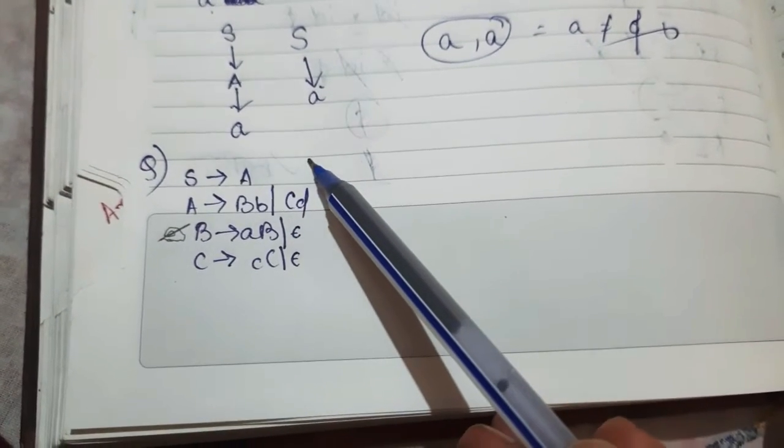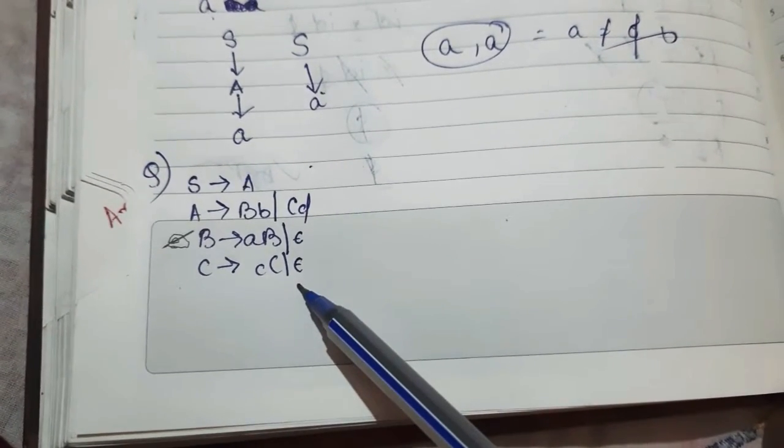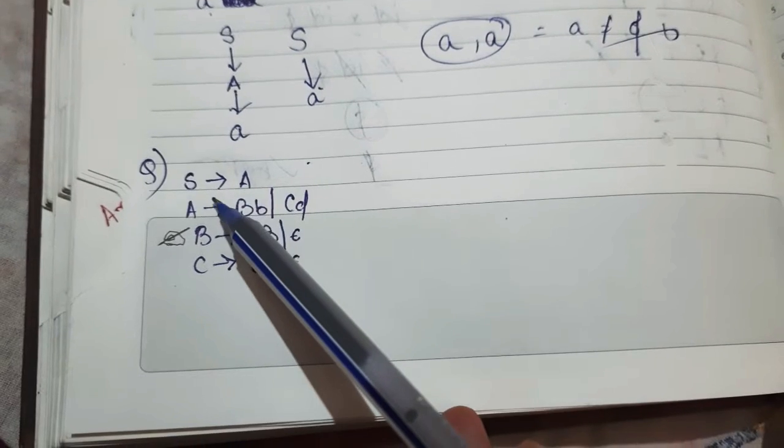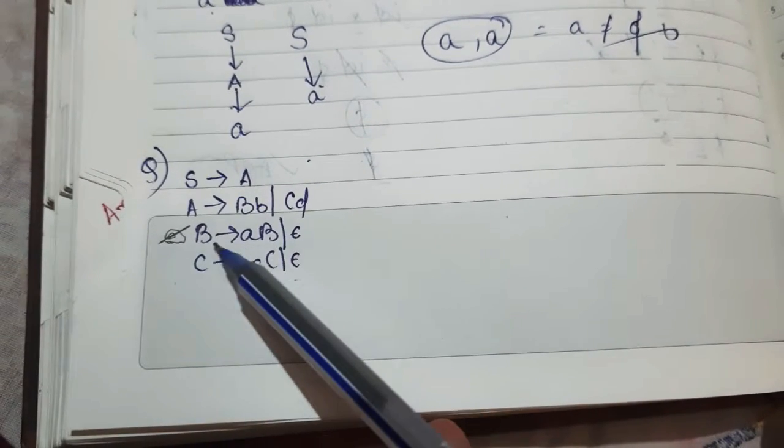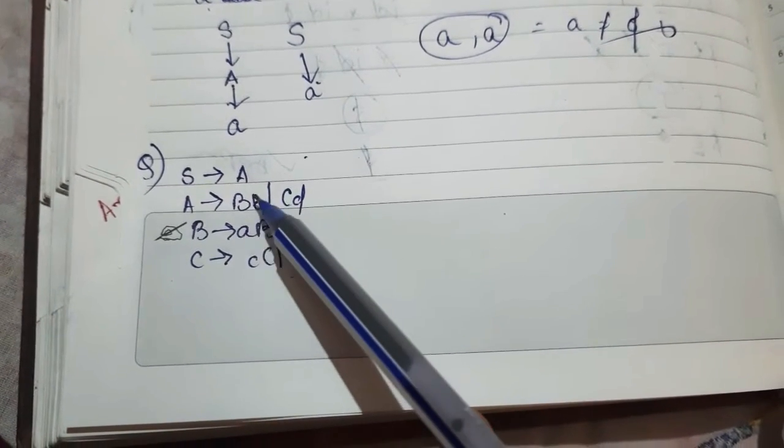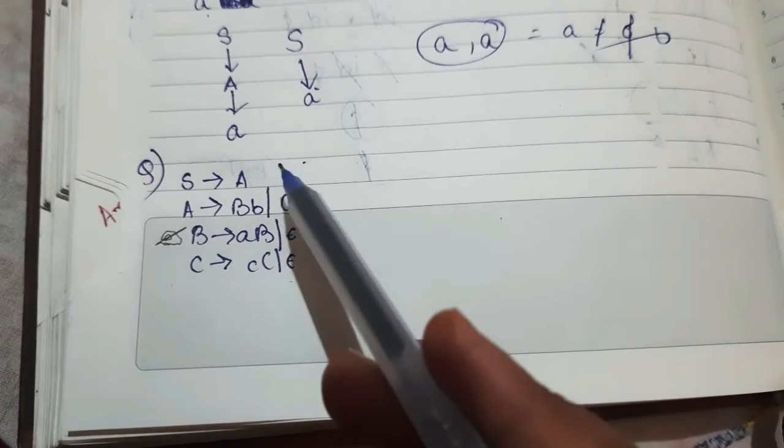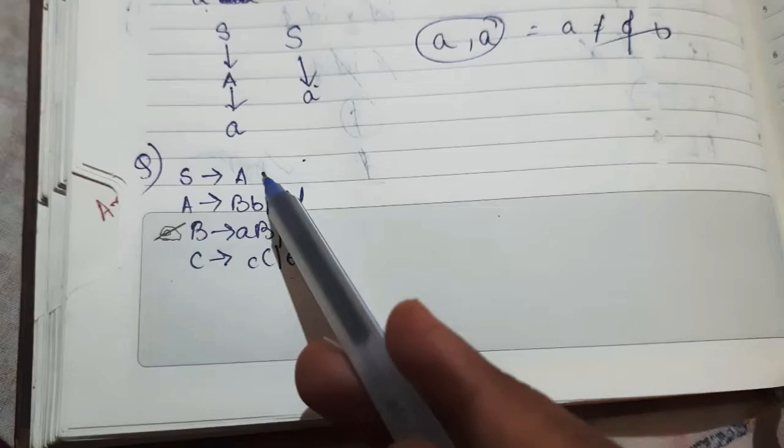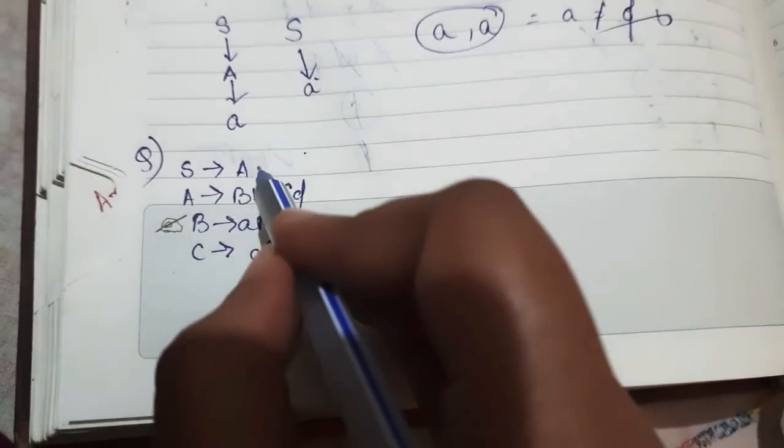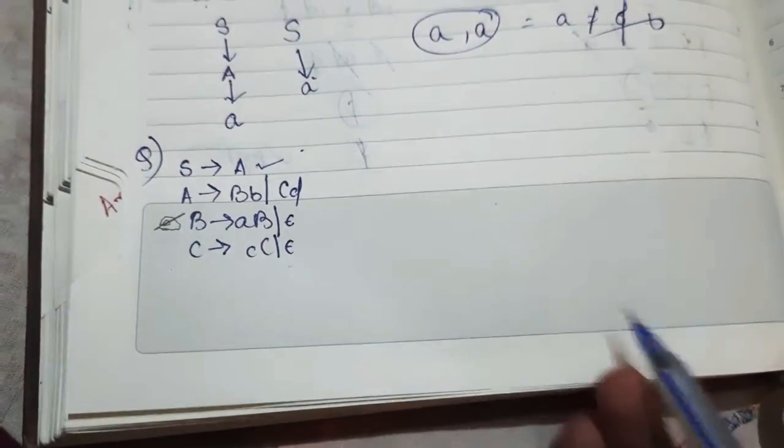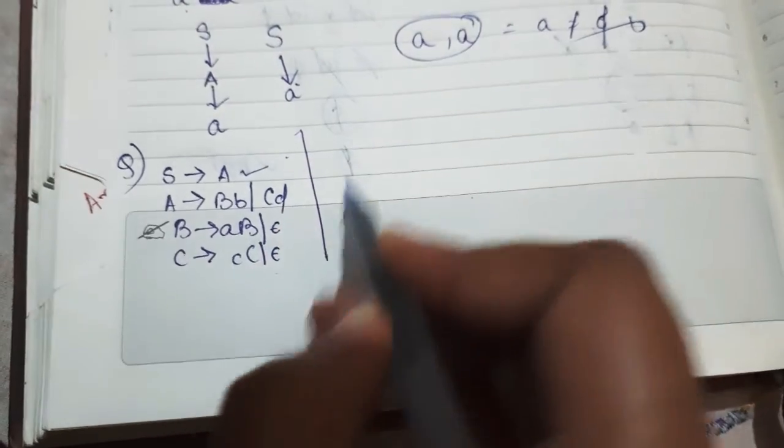We need to check if this grammar is LL1 or not. We cannot find any left recursion, also left factoring is not required, and since this is a single production, this is LL1 by default.